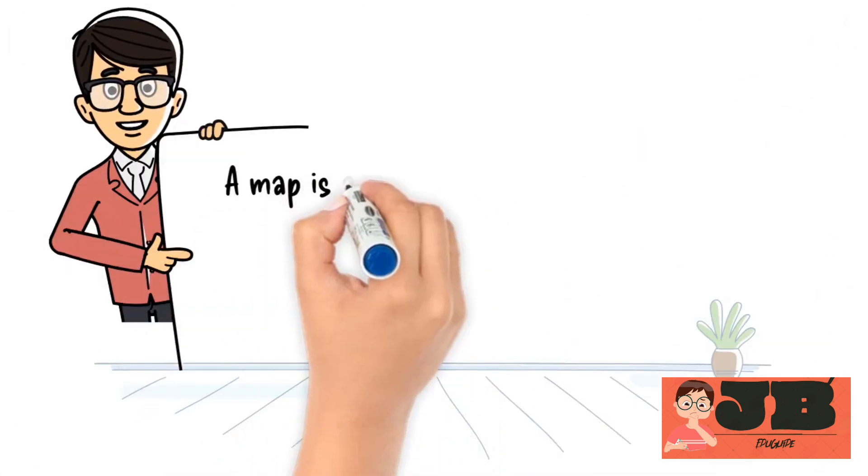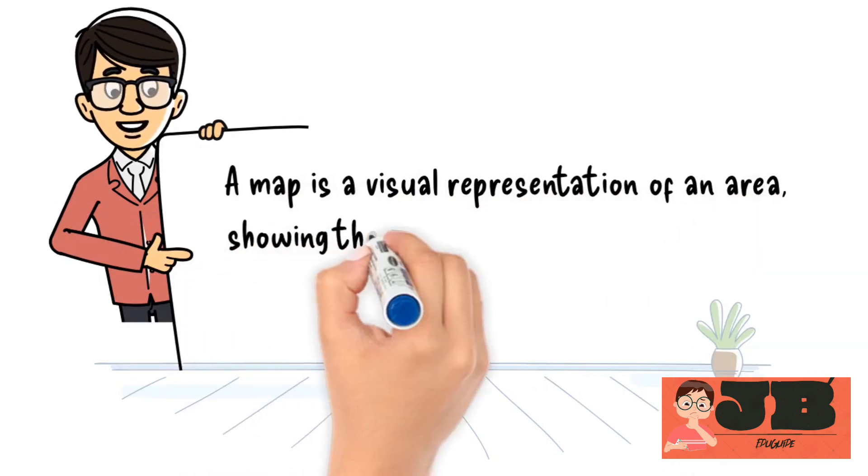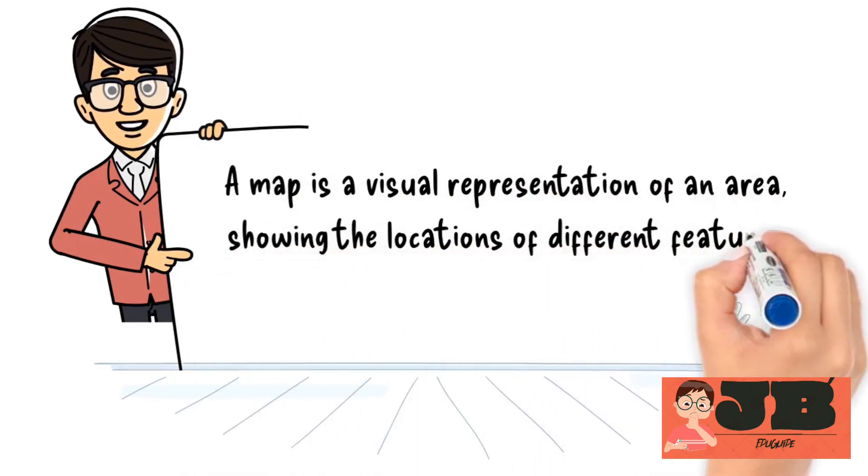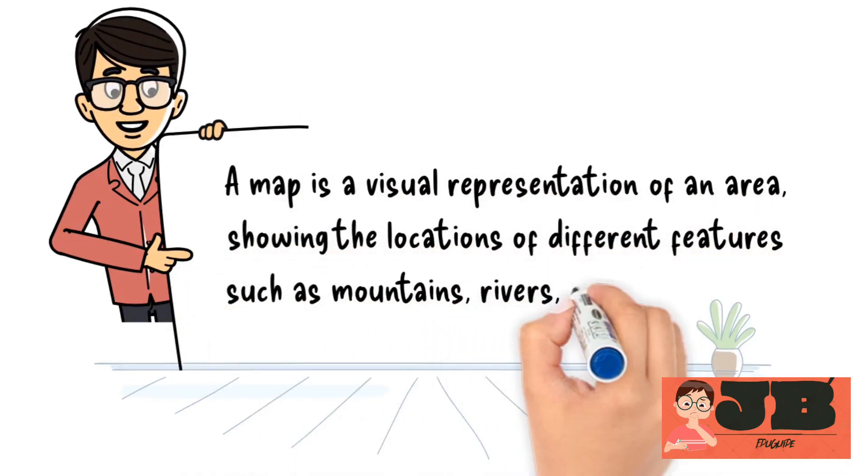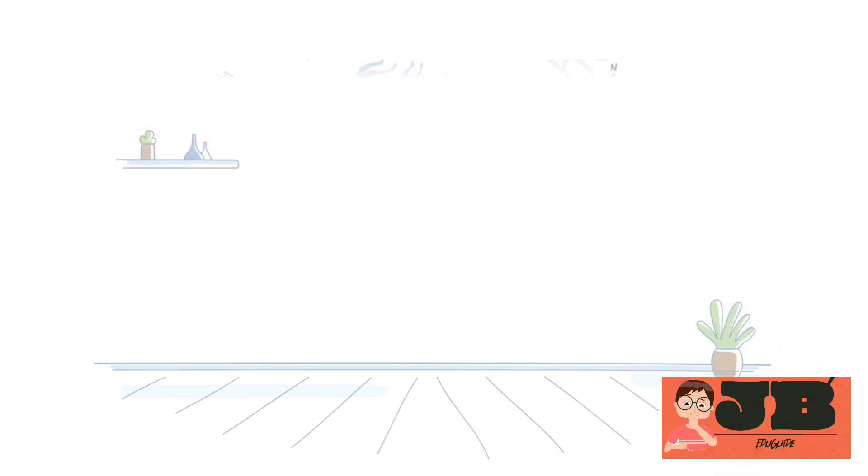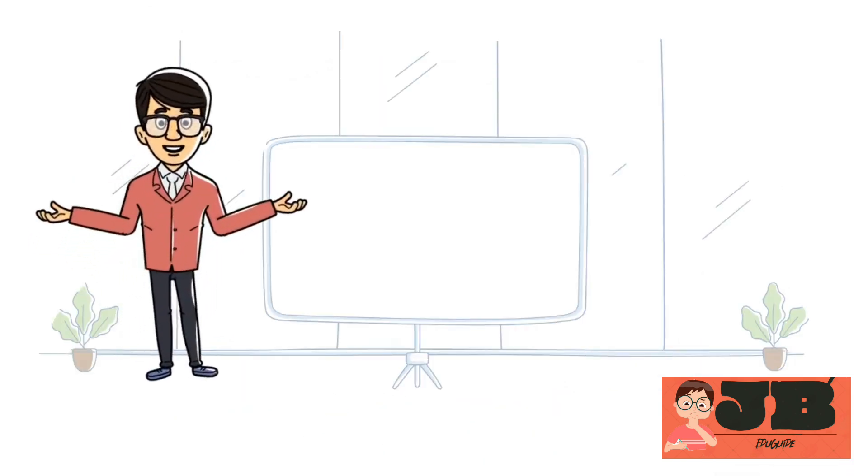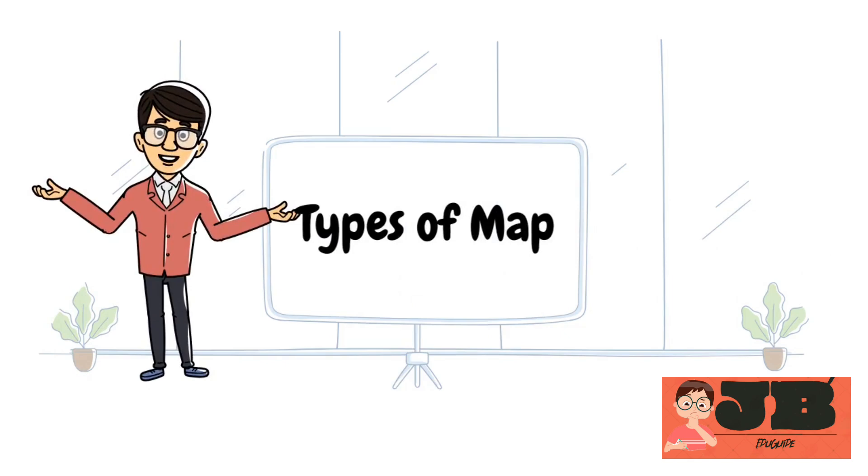Let's understand. What is map? A map is a visual representation of an area, showing the locations of different features such as mountains, rivers, cities, and roads. Just like this. Next, let's understand the types of map.